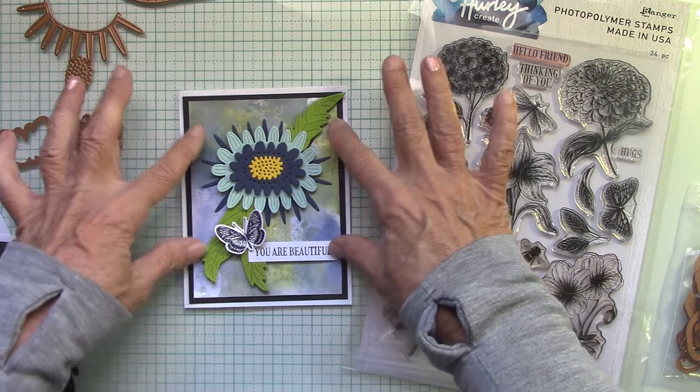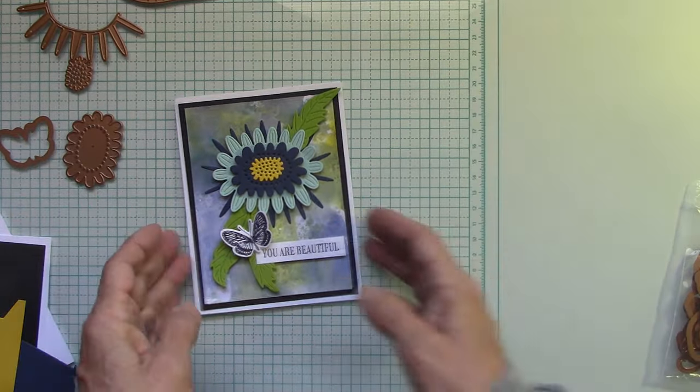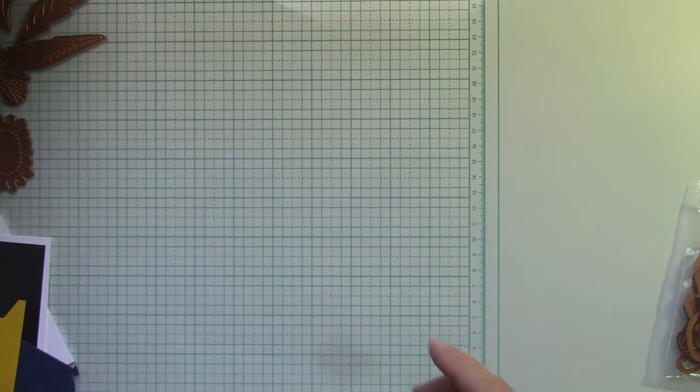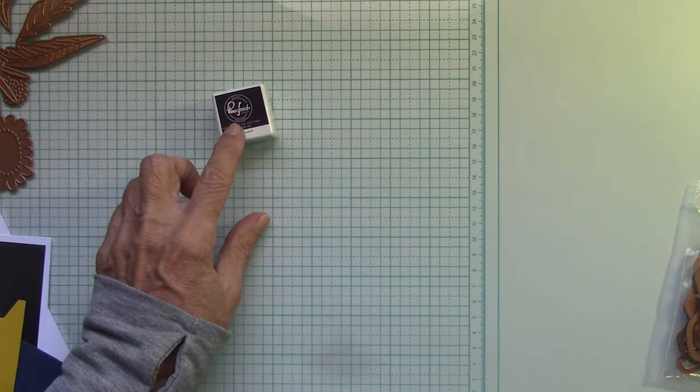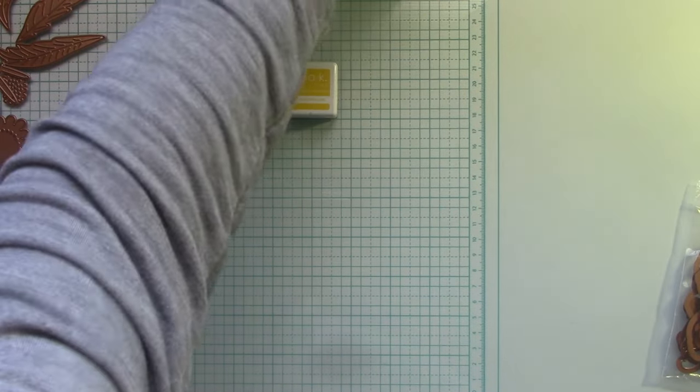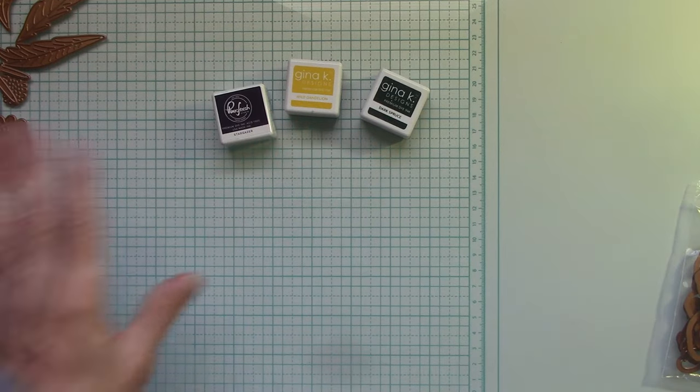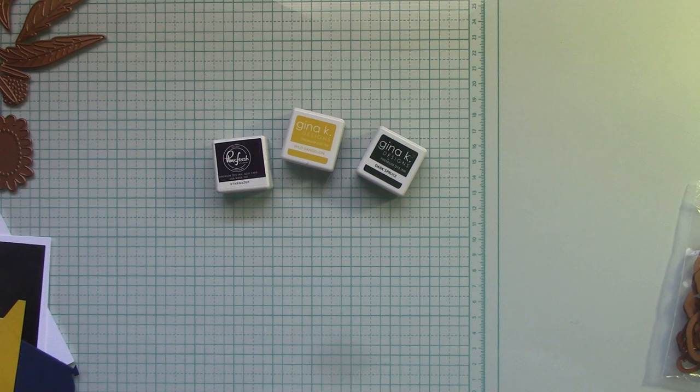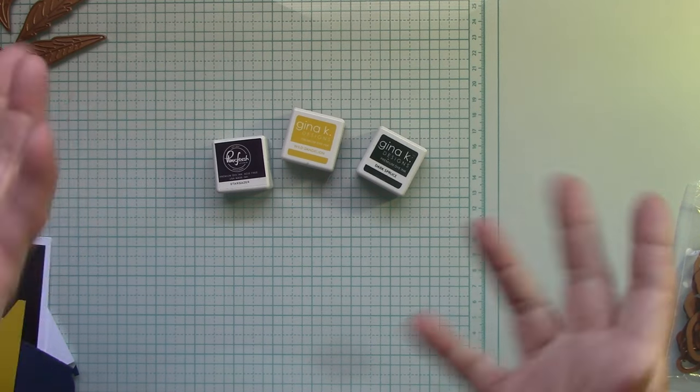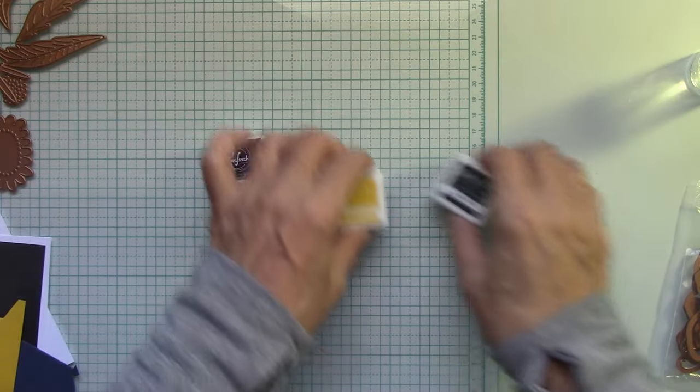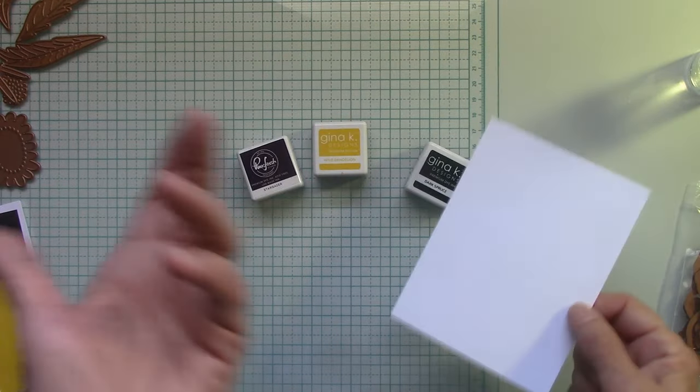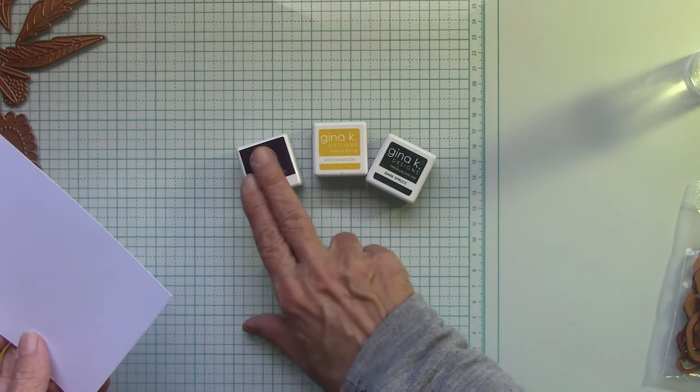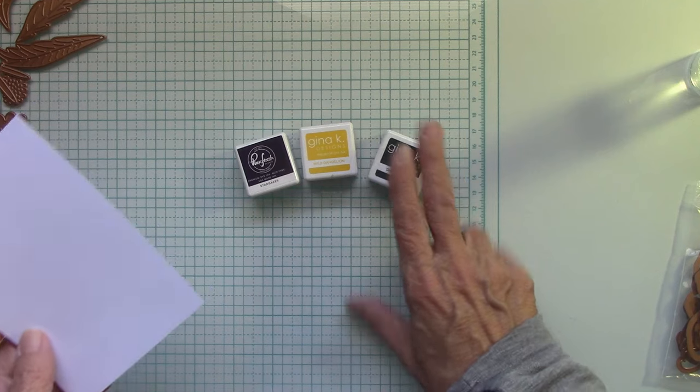Okay, so let's get into what we want to do. First, make our paper because we're going to use a little water and ink. I'll move these aside. So I used the darkest of the Pinkfresh Studio inks, Stargazer, some Wild Dandelion and some Dark Spruce from Gina K. Use any inks that you want. I am an ink cube person because they're small, they're easy to use, and it's a good way to test color that you love.